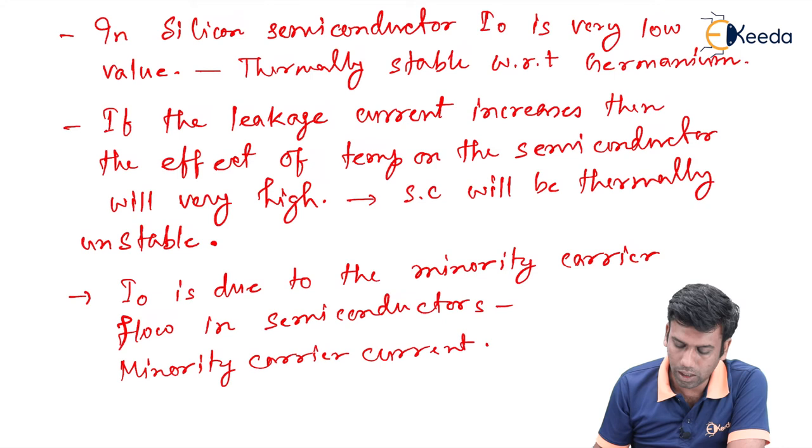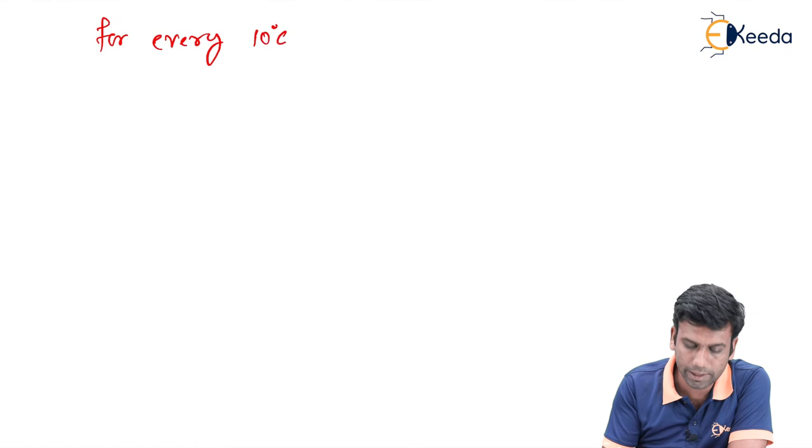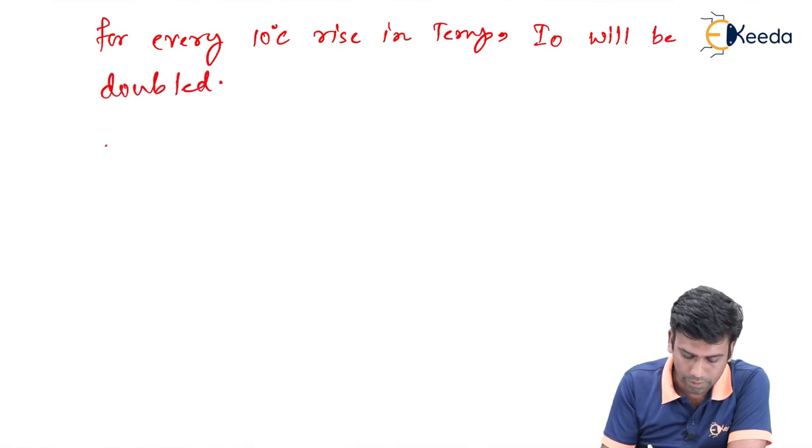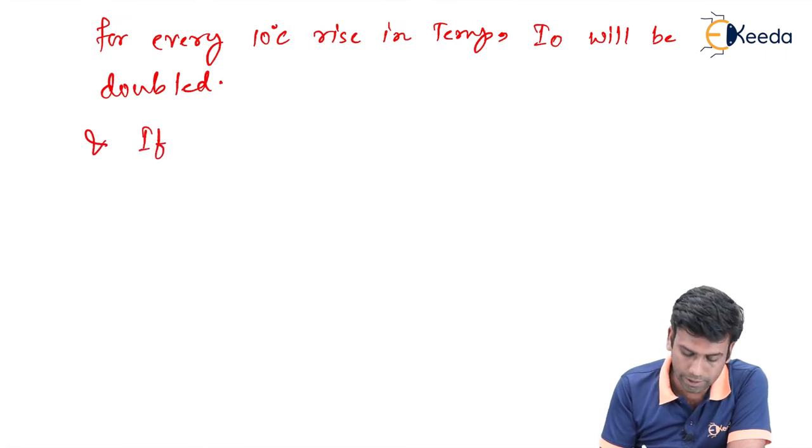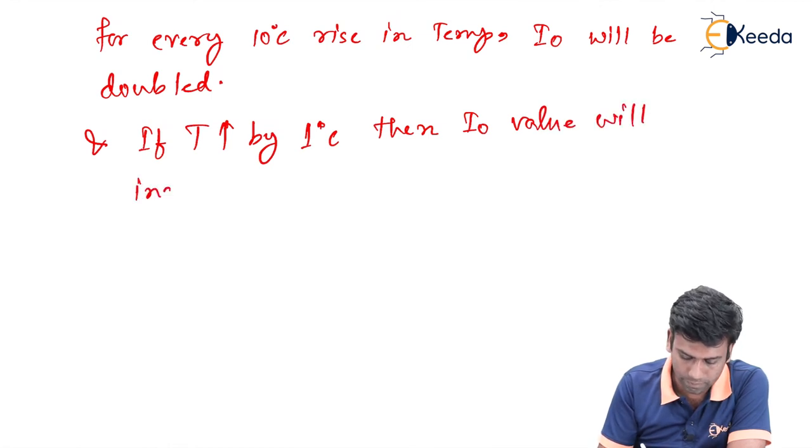Now let us see how this minority carrier current or I0 depends on the temperature. Generally, the rule of thumb is that for every 10 degree centigrade rise in the temperature, the I0 will be doubled. And if we increase the temperature by 1 degree centigrade, then the I0 value will increase by 7 percent.